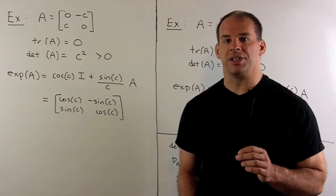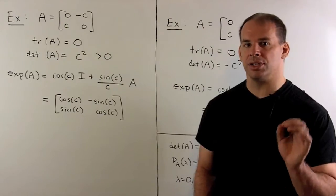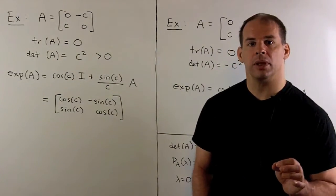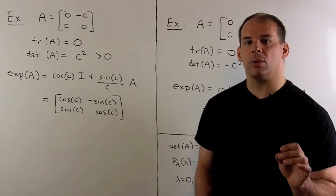Looking at concrete examples, suppose A equals zero minus C, C zero, where C is non-zero. Then, trace of A is zero, determinant of A is C squared, which is positive.